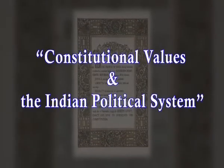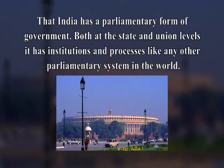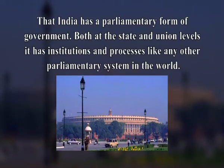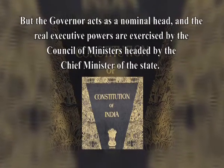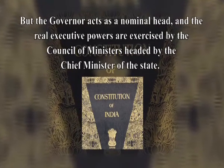Learners, you have studied in the lesson on constitutional values and the Indian political system that India has a parliamentary form of government, both at the state and union level. It has institutions and processes like any other parliamentary system in the world. At the state level, there is a governor in whom the executive powers of the state are vested by the constitution, but the governor acts as a nominal head and the real executive powers are exercised by the council of ministers.